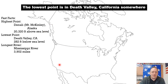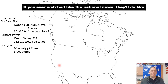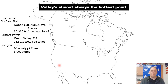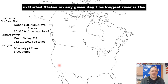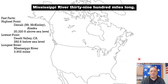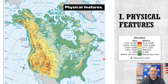The lowest point is in Death Valley, California — inland California. If you ever watch the national weather, Death Valley is almost always the hottest point in the United States on any given day. And the longest river is the Mississippi River at 3,900 miles long.